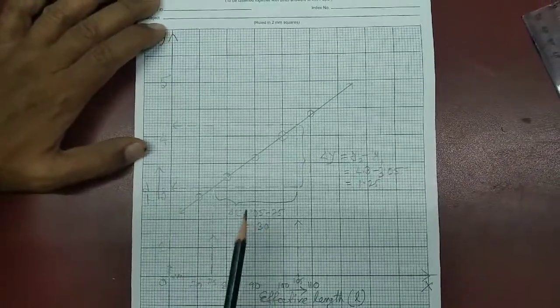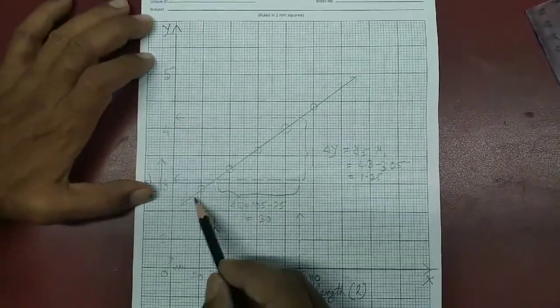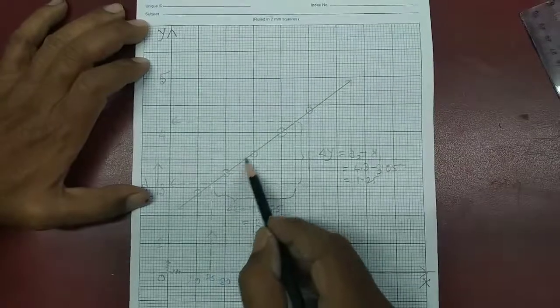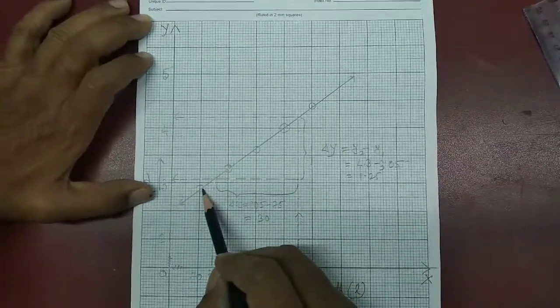When we plot all the information on the graph paper, we have noticed a straight line can be drawn passing through all the points. Now